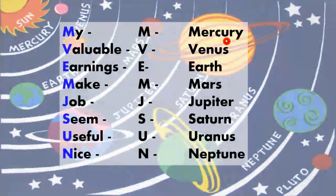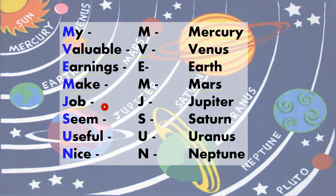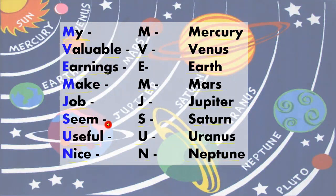Now let us revise this sequence once again. My — M stands for Mercury. Valuable — V stands for Venus. Earnings — E stands for Earth. Make — M stands for Mars. Job — J stands for Jupiter. Seem — S stands for Saturn. Useful — U stands for Uranus. And Nice — N stands for Neptune. So: my valuable earnings make job seem useful and nice — this gives us the sequence of the planets of the solar system.